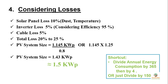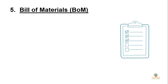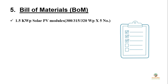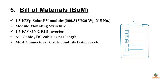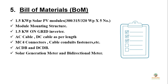A useful shortcut: divide your annual energy consumption by 365, then by 4, or simply divide by 1500 to get the system size. For the bill of materials, this includes 1500-watt solar panels — 5 numbers of 300–315 watt panels — a 1.5 kW module mounting structure, a 1.5 kW on-grid inverter, AC and DC cables as required, MC4 connectors, cable conduits, fasteners, switching and protection systems (AC-DB and DC-DB), a solar generation meter, a bi-directional meter, earthing kit, and lightning arrester.